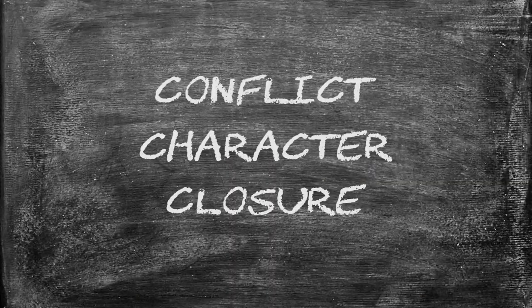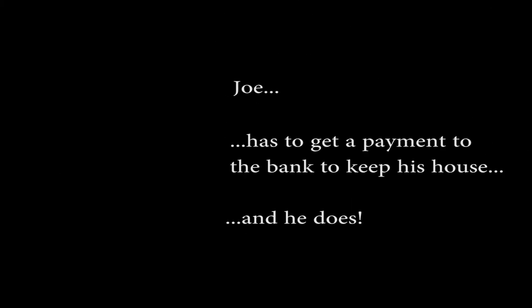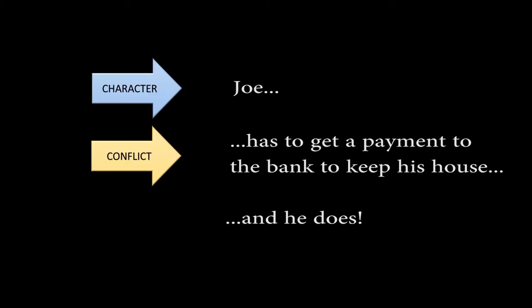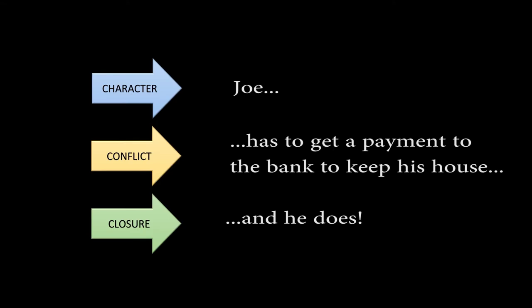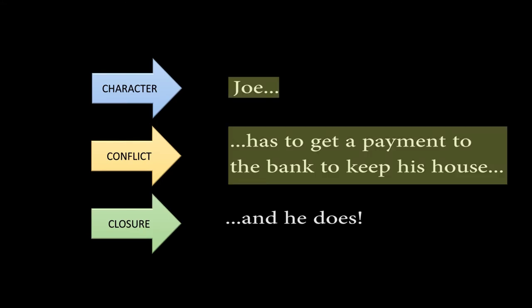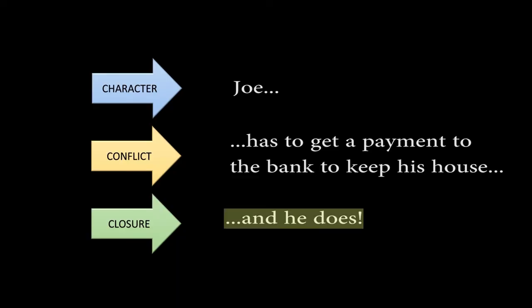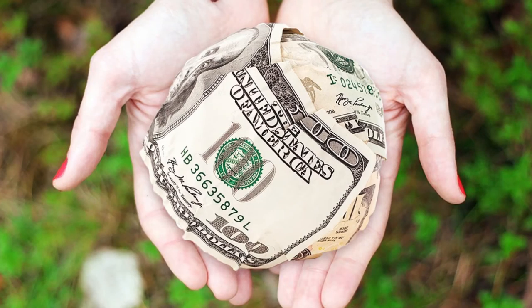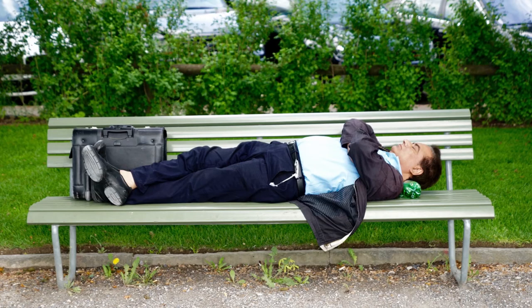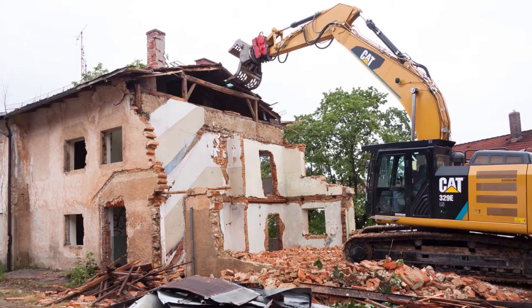So now that we've defined the three basic story components, let's use them in a simple story. Joe has to get a payment to the bank to keep his house. And he does. The end. The character is Joe. The conflict is his need to get the payment to the bank. And the closure is the fact that he succeeds. Though we talk about these components as if they're separate things, they're not. Joe's conflict — his need to get that payment to the bank — is part of his character. If he didn't care about getting the payment in, there wouldn't be a conflict. Likewise, the closure is implicit in the conflict. Joe either makes the payment, doesn't make the payment, or circumstances change so that he no longer needs to make the payment.